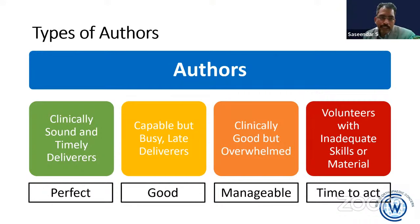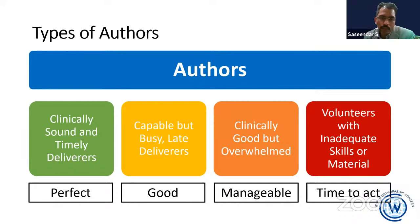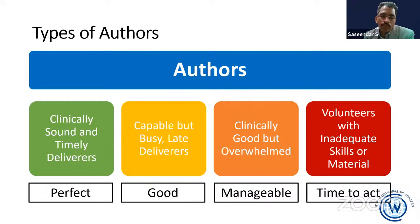For discussion, I would classify authors into four types. The first — the perfect one — they are very clinically sound and deliver the chapter within the deadline. Perfect. The second type: they are capable and clinically very sound with a lot of material, but they are too busy, so they can't deliver in time — but they do deliver with some delay. That is also fine.